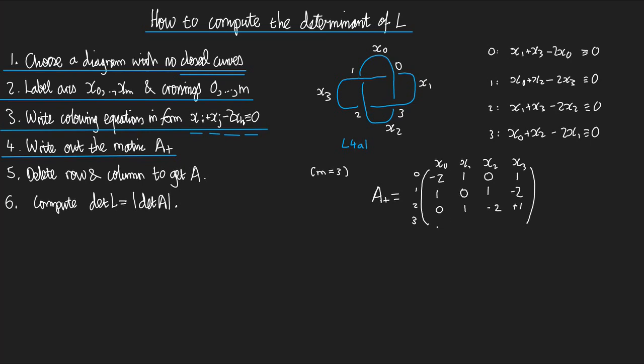And for crossing number 3, we have 1 x0, 1 x2, minus 2 x1s, and no x3s. So there we go, that was step number 4.